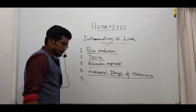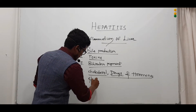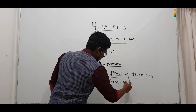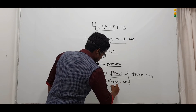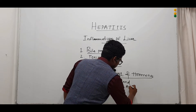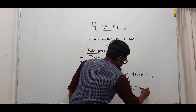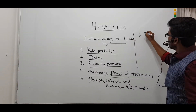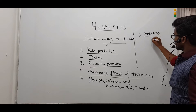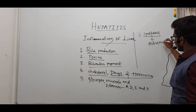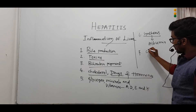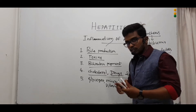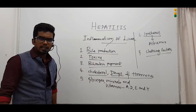The storage of glycogen, minerals, and fat-soluble vitamins — that is A, D, E, and K — are affected. The synthesis of other blood proteins, for example albumin, is also affected. Moving ahead, even clotting factors are not synthesized due to the disease hepatitis, because the liver is majorly affected.